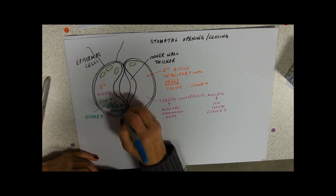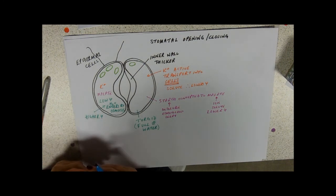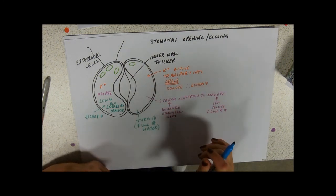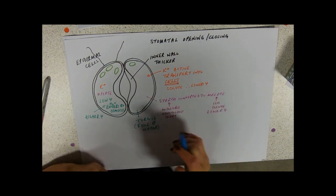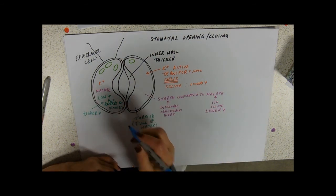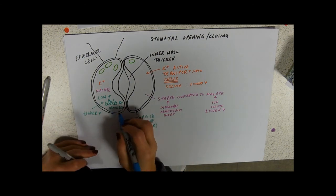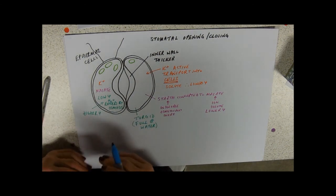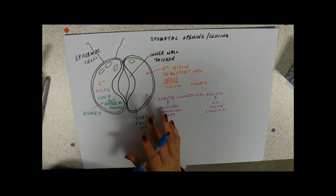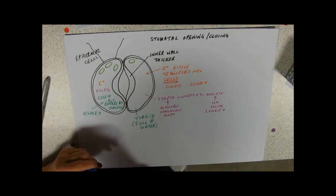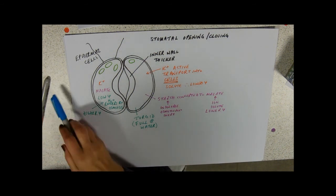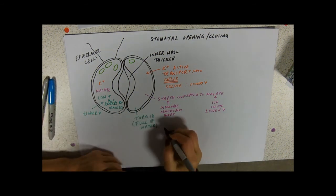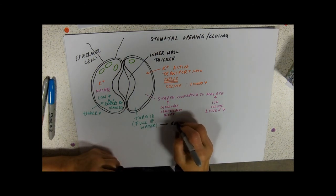So when you're describing, wording is so important: active transport into the cells lowers the water potential, starch to malate lowers the water potential, water enters - don't just talk about water entering, talk about osmosis, by osmosis from a high water potential to a low water potential. Cells get turgid, then when they're turgid they bend open.